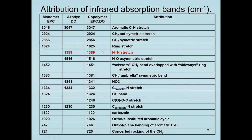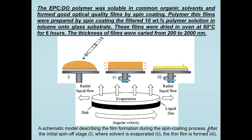Thin films were obtained by spin coating of the azopolymer solution onto glass substrates. The polymer solution was placed onto the glass substrate, then by rotation the solution was evaporated and the thin film was obtained. After that, films were dried in an oven at 60°C for six hours. The thickness of the final film varied from 200 nanometers up to 2000 nanometers.